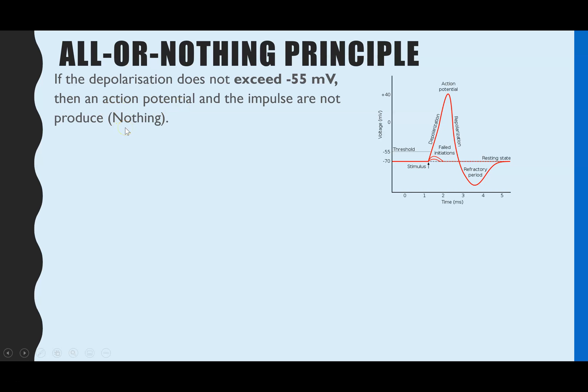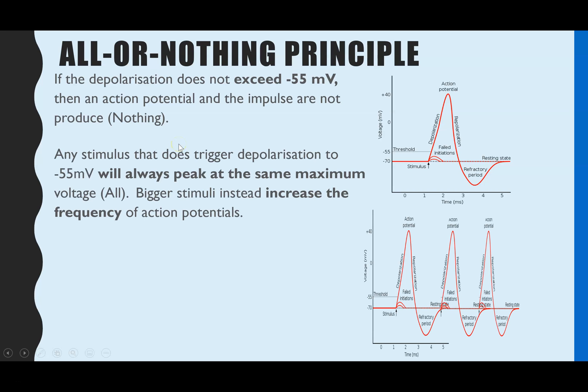And that's the nothing part of all or nothing. So the all part is the fact that if you do reach minus 55, you will always have an action potential, but all of them will peak at the same level, plus 40 millivolts. And that's because as soon as you get to that voltage, it causes the sodium ion channels to shut, and then we go into repolarization.